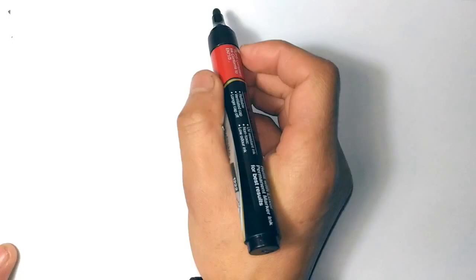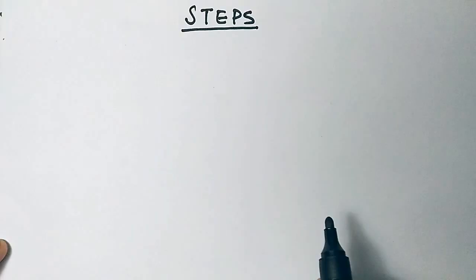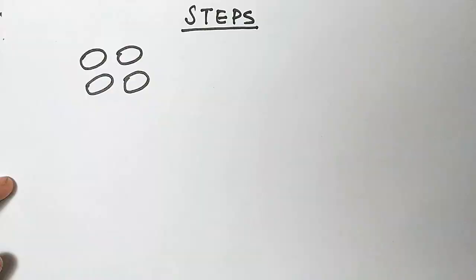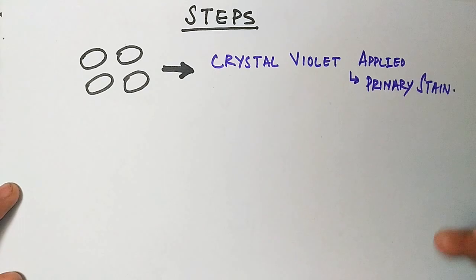Now we will see the step-by-step procedure of this technique. We have some cells here, that is the bacterial cells, and we add crystal violet to them. When we add crystal violet to them, all the bacterial cells will attain the color of crystal violet dye. There is no difference here in this step.